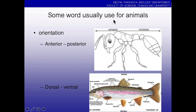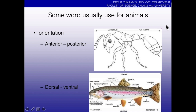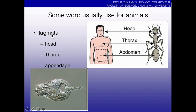Next, I will show you some words usually found in animal identification keys. The first is orientation terminology. Unlike plants, animals have anterior, posterior, dorsal, and ventral directions. Anterior is the front part, posterior is the back part, dorsal is the upper part, and ventral is the lower part. Orientation words are very important when you use a key book to identify insects or other species.